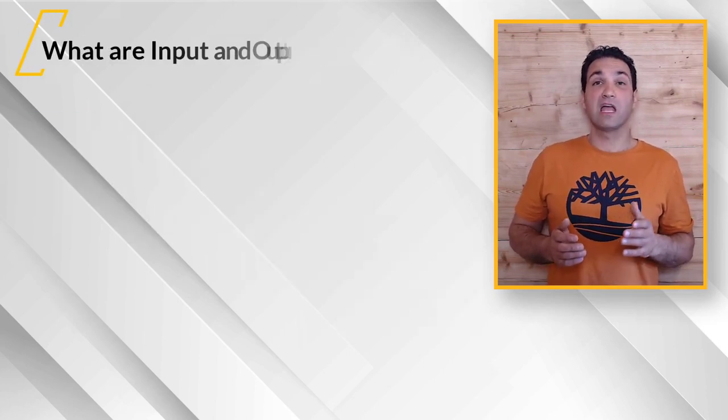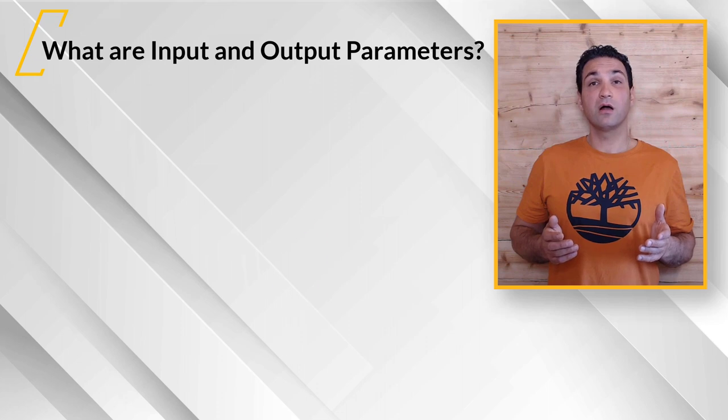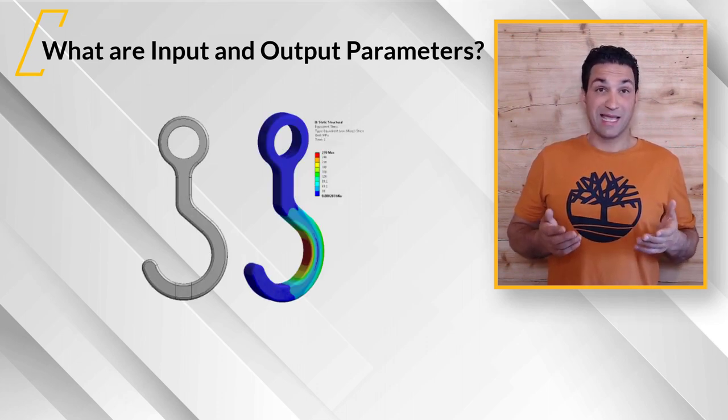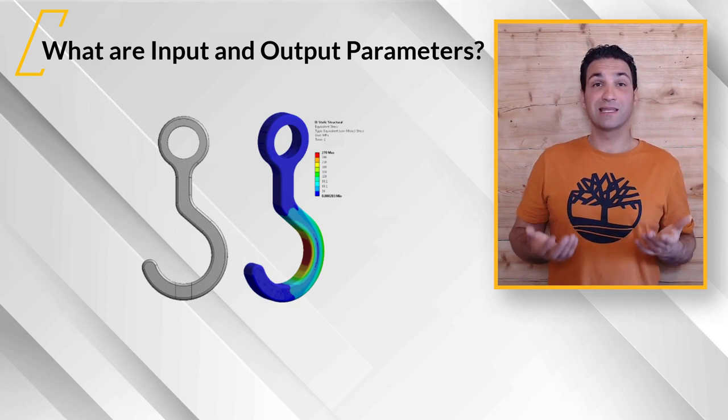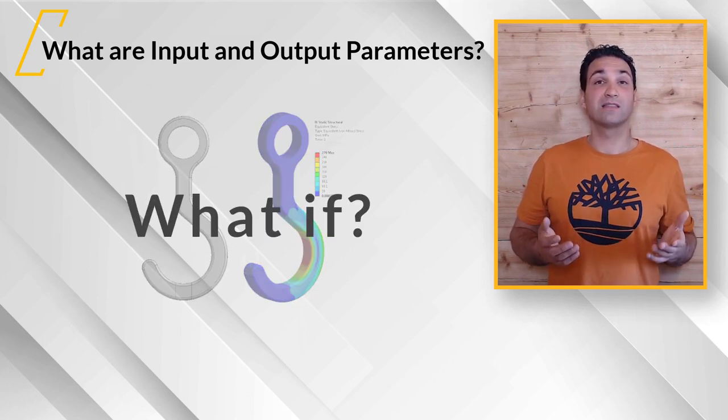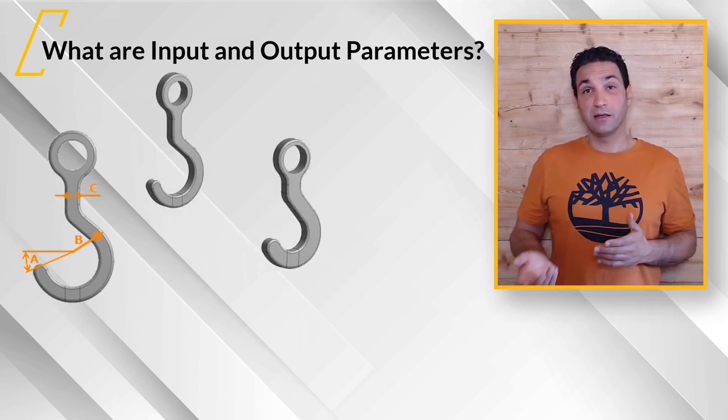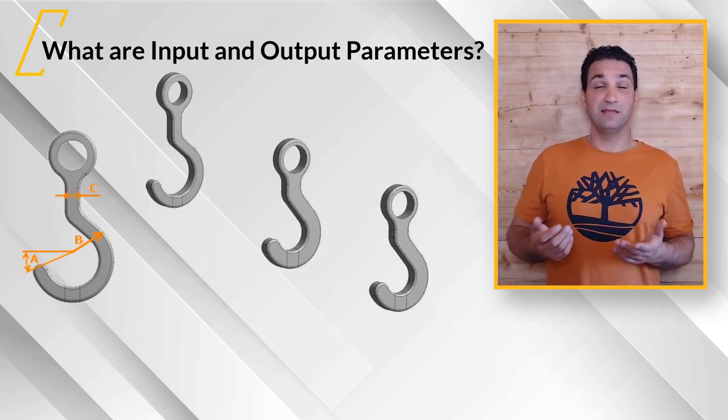Let's say we have a structural simulation model of this hook. Once this is set up, as an engineer, you automatically ask the question: what if? What if I change the geometry like radius, opening angle, thickness, and depth?